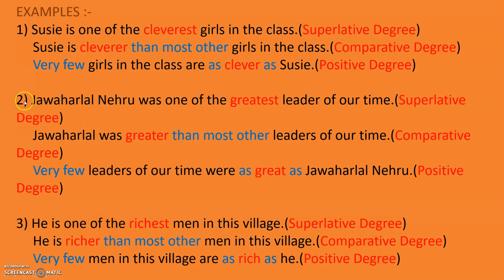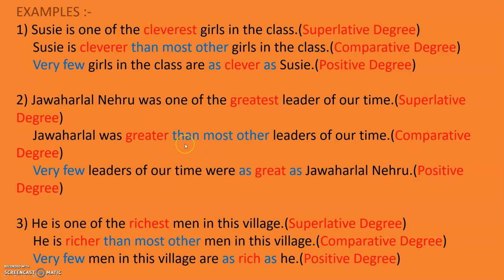When I say: Jawaharlal Nehru was one of the greatest leaders of our time — 'one of the greatest' means there were other leaders also. So it is superlative degree. Comparative: Jawaharlal Nehru was greater — ER — than most other leaders of our time. The same words appear: 'than most other.' Positive: very few leaders of our time were as great as Jawaharlal Nehru. This is positive degree.